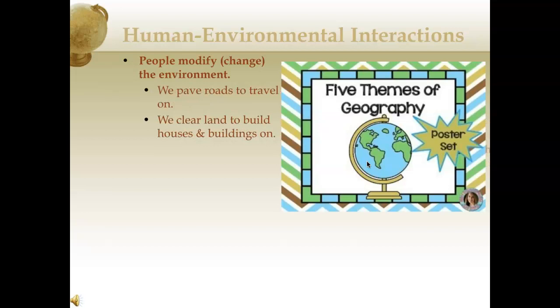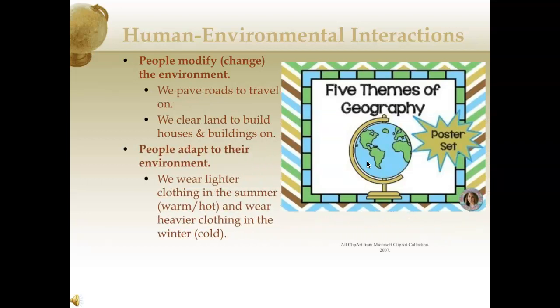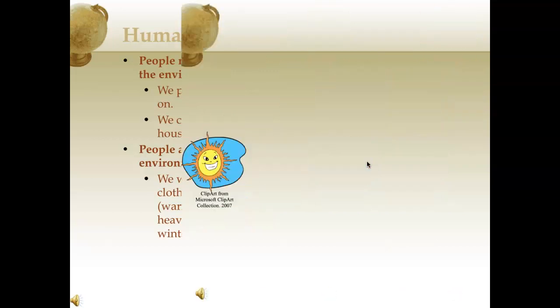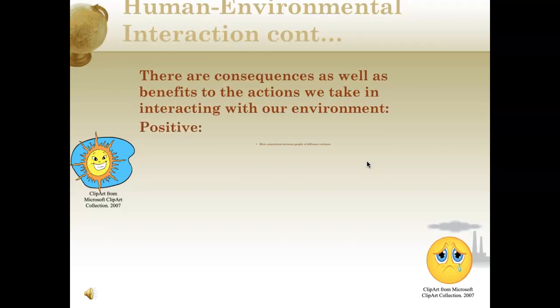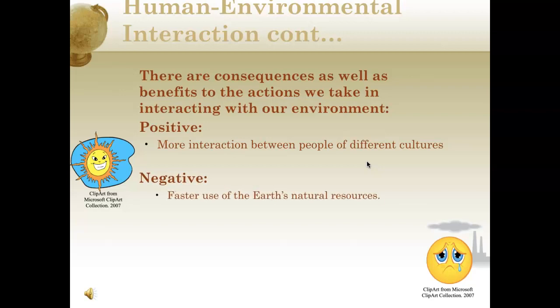In regards to human environmental interaction, people can and do modify and change their environment. When we pave roads to travel on, we're changing it. When we clear land to build houses and buildings, we're also changing the environment. But people also adapt to their environment — we wear lighter clothing in summer and heavier clothing in winter. We're also focusing on the consequences as well as the benefits of our interactions. Some positives include cultural exchange; some negatives include faster use of natural resources, air pollution, and global warming.